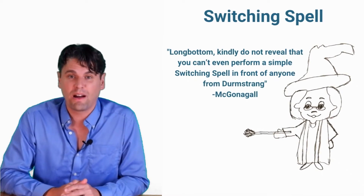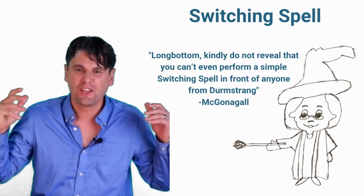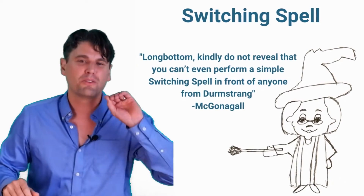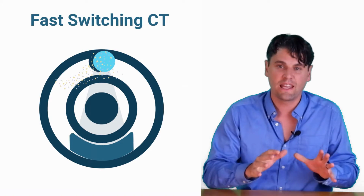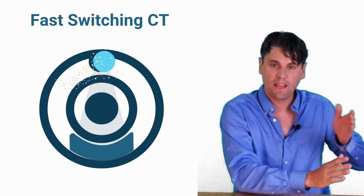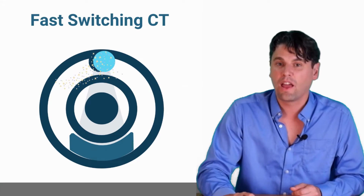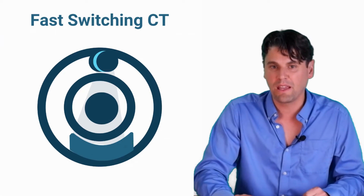The first approach is the switching spell. McGonigal called out Longbottom and said you probably can't even perform a switching spell. In terms of switching, we're talking about fast switching between those different KVPs. Changing the KVP will change the energy spectrum used. So if you could switch from view to view — high KVP, low KVP, high, low — you could use that information in order to reconstruct the dual energy information. This is how a true fast switching CT system works.